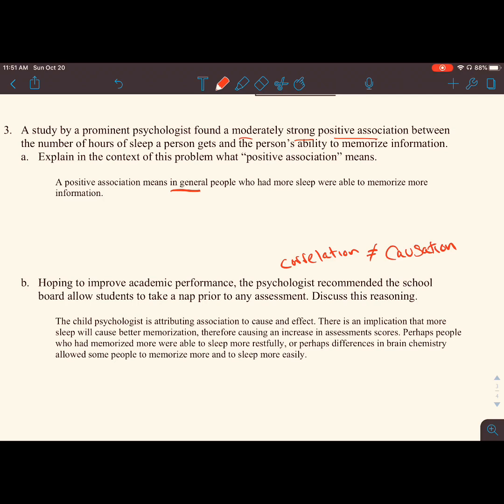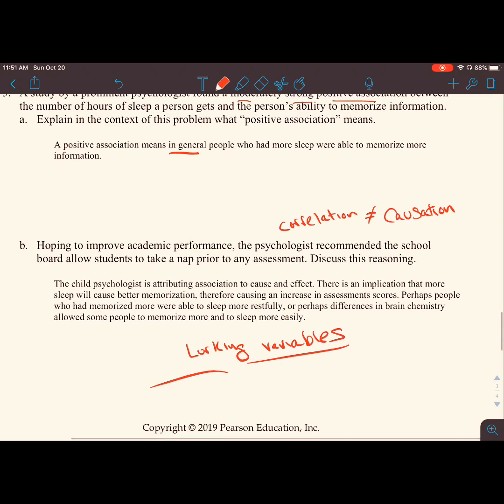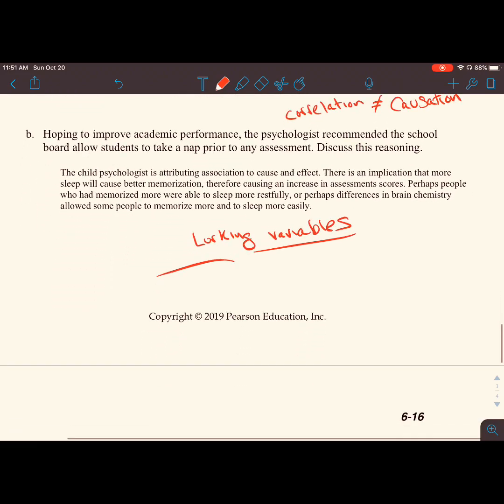There's an implication that more sleep will cause better memorization, therefore causing an increase in assessment scores. Perhaps people who memorized more were able to sleep more restfully. Or perhaps differences in brain chemistry allowed people to memorize more and to sleep more easily. There's so many different factors going on. Lurking variables are present. You just don't want to go, 'oh, strong association, therefore cause and effect.'